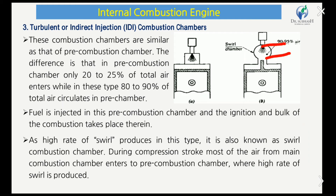The turbulence combustion chamber is similar to the pre-combustion chamber. The difference is that in the pre-combustion chamber only 20 to 25 percent of the total air enters the pre-chamber, while in the turbulence type, 80 to 90 percent of total air circulates through the pre-chamber.